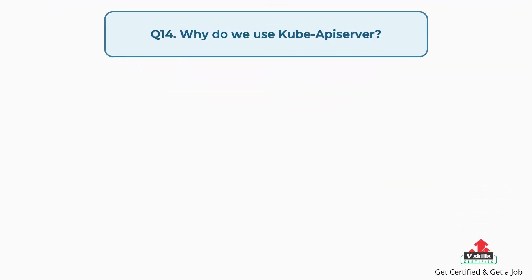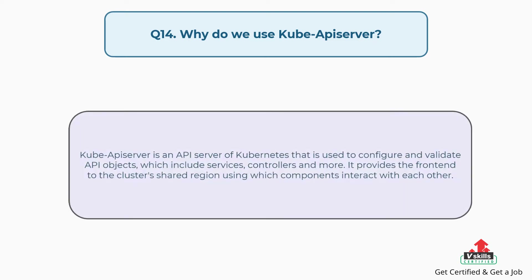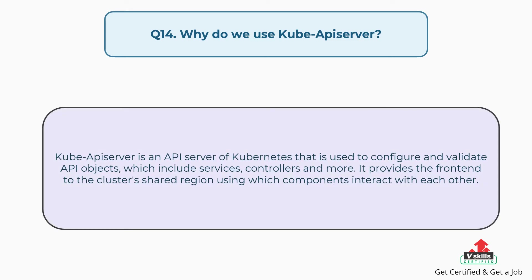Question number fourteen: Why do we use the Kube API server? The Kube API server is an API server of Kubernetes used to configure and validate API objects, which include services, controllers, and more. It provides the front end to the cluster's shared region, using which components interact with each other.